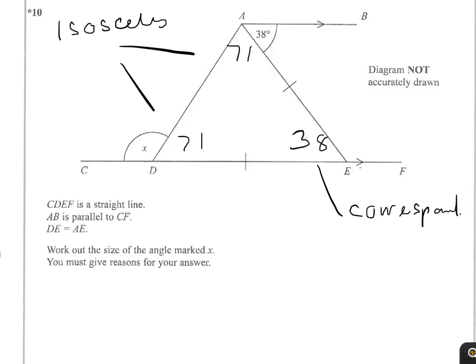And finally, angle X is on a straight line. So X equals 180 minus 71, which equals 109, because they're on a straight line. I'll just put SL there. And that's your answer.